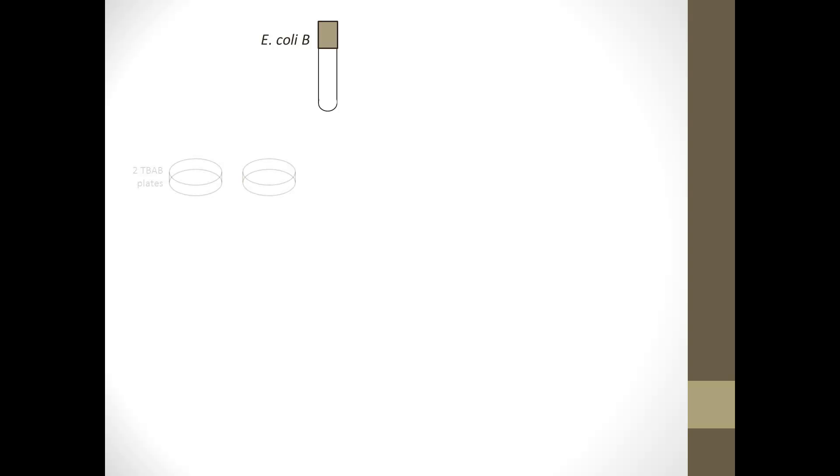You're going to start by obtaining, in addition to the E. coli, a couple of plates to grow the E. coli on. E. coli will grow in liquid media, but also on solid media. These plates are filled with TBAB agar, a very rich media. The bacteria will very happily grow on the TBAB. You're going to get two of them. Make sure you label them correctly with small letters around the periphery with your name and the date and what you're putting on it, E. coli B.